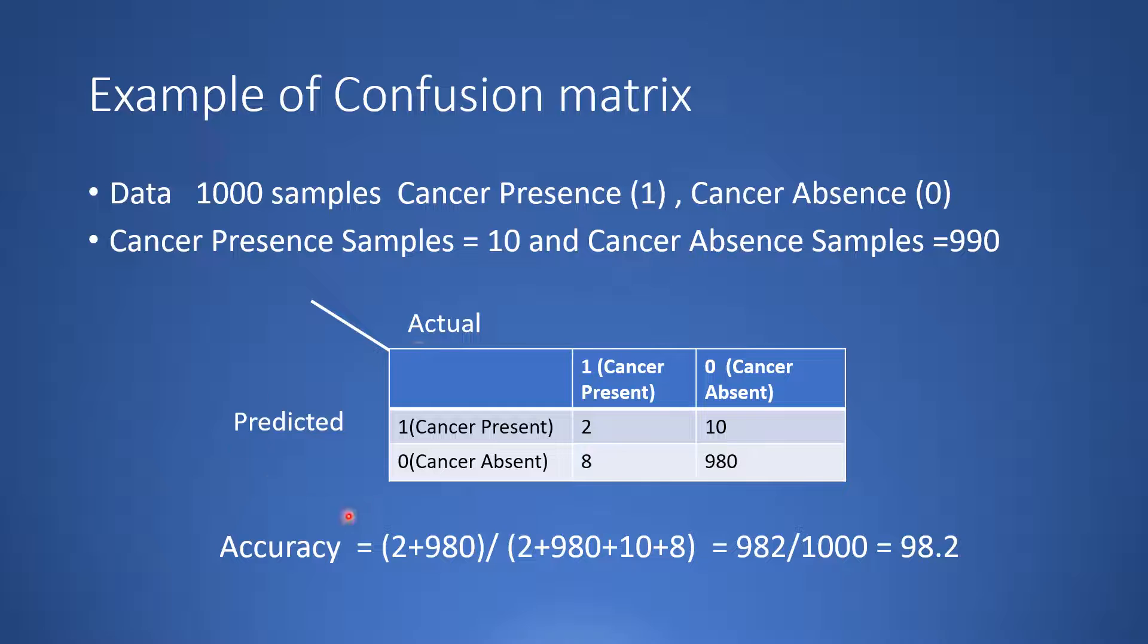But what is the flaw over here? This is a kind of an imbalanced data set. The number of positive classes is very small.